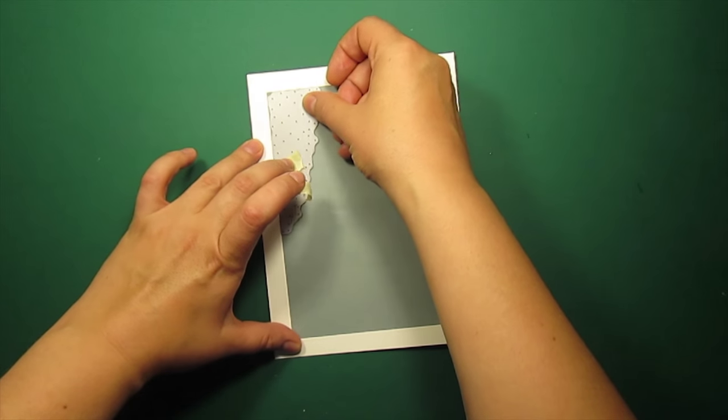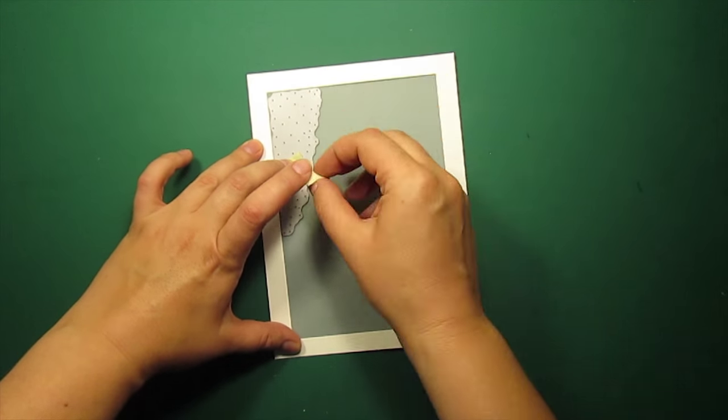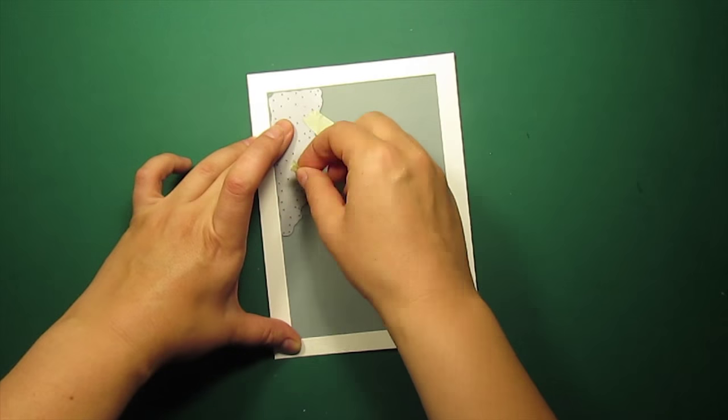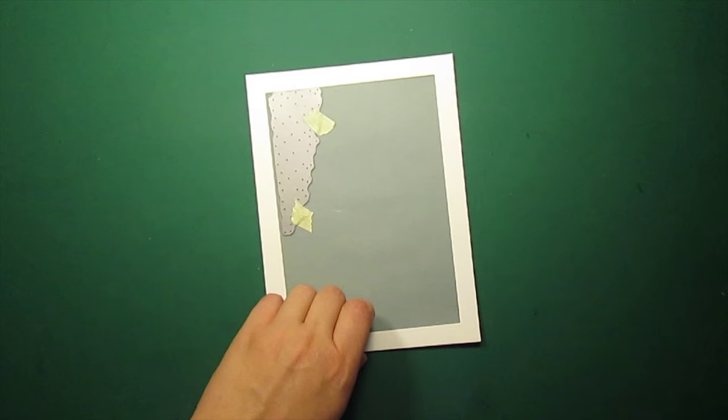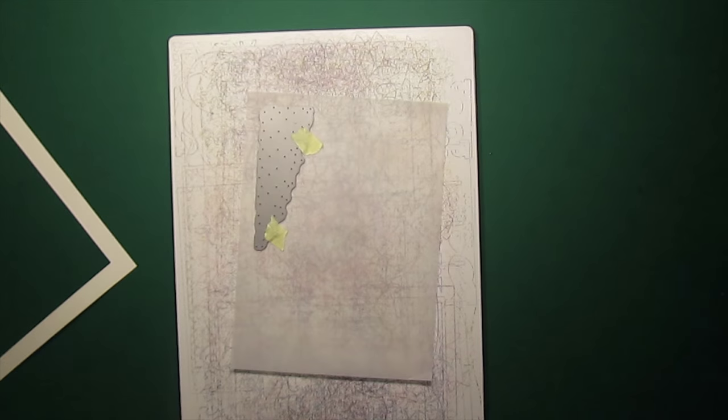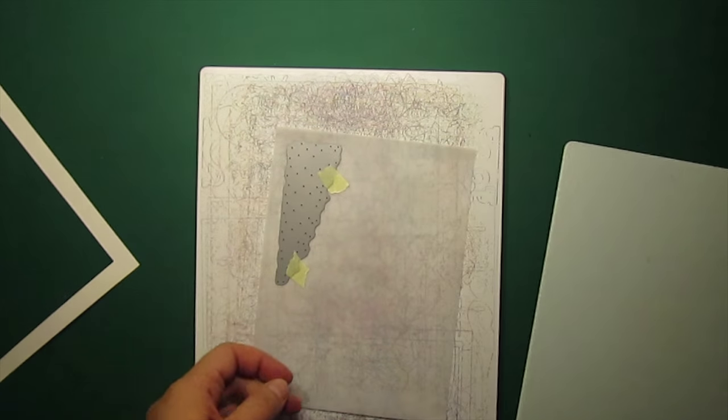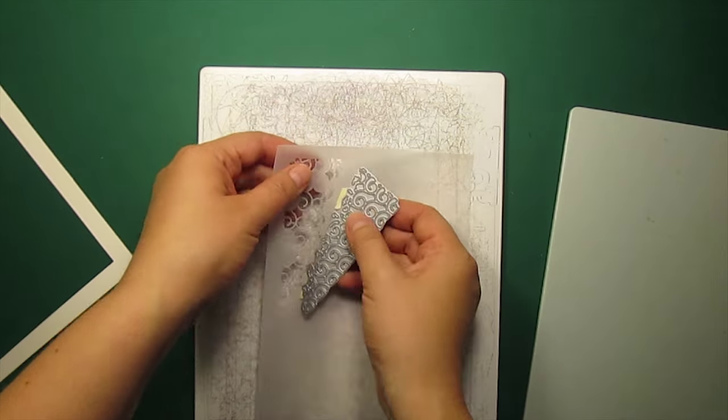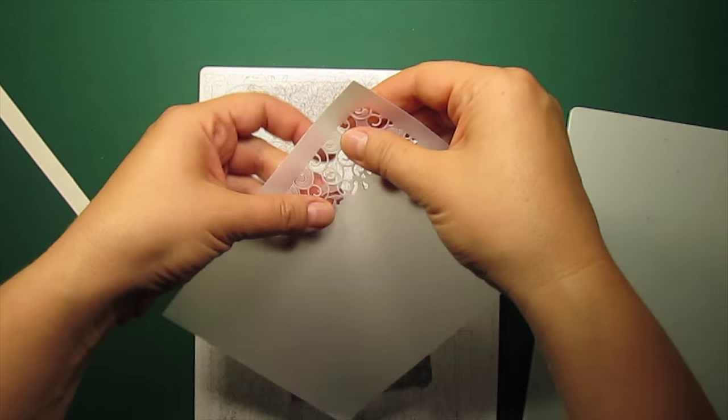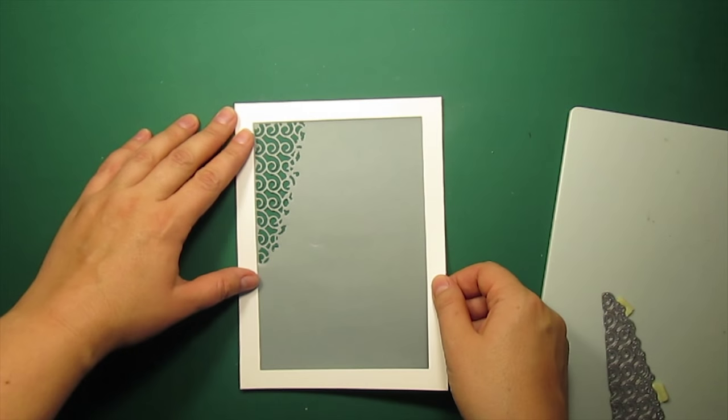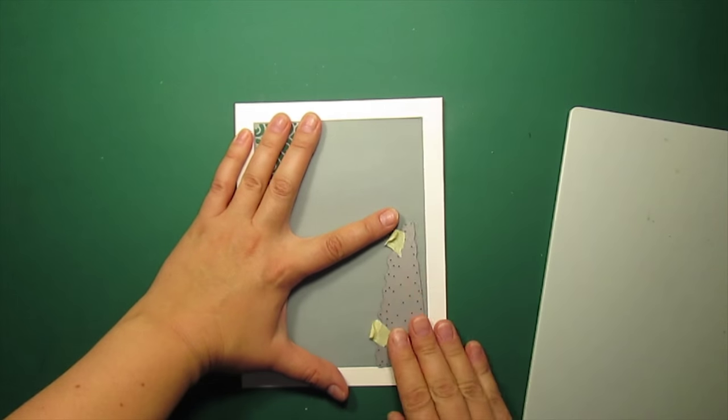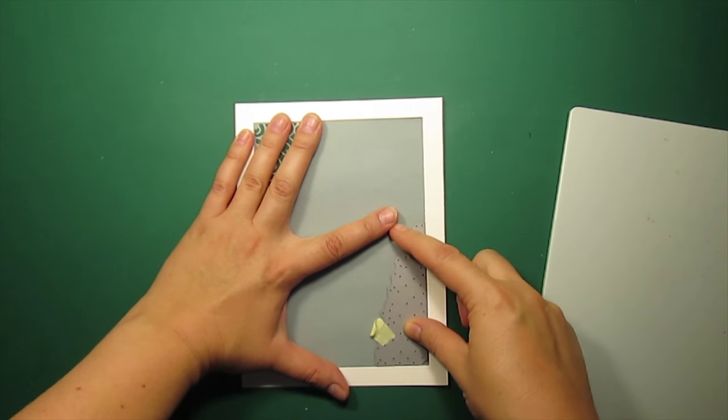The next step is positioning the corner die and here I am using the corner from the Distressed Eddington Collage die set from the new Memory Box Holiday release. I'm going to repeat this step to the opposite corner.